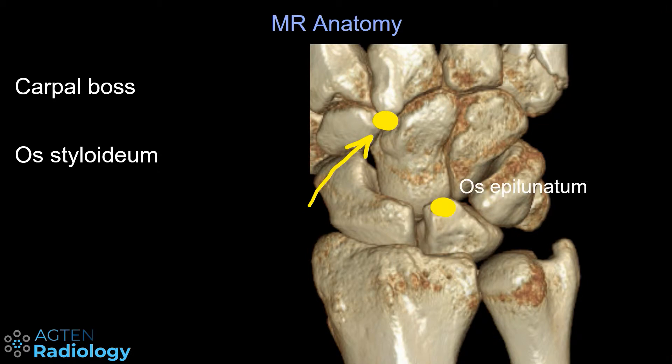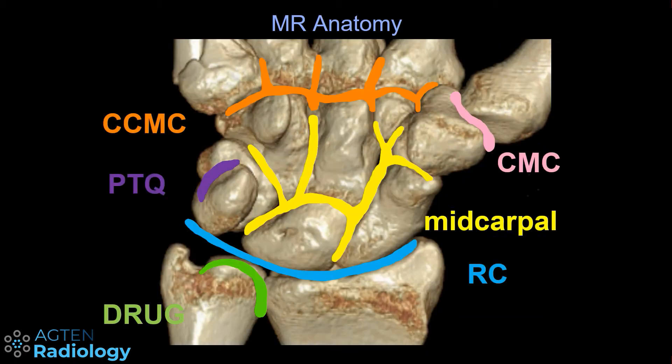If it's above the lunate then you can call it an os epilunatum, or epilunate ossicle. Now let's move on to the different compartments in the wrist.